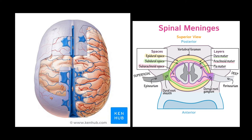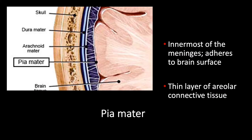The meninges wrap the entire CNS, so they continue within the spinal cord. We can see those three layers — again going from the deepest, the pia mater, to the outermost, the dura mater. The innermost layer of the cranial meninges is the pia mater, which adheres directly to the surface of the brain. It's comprised of a thin layer of areolar connective tissue, and this probably gives rise to its name — pia mater — which translates to tender mother.